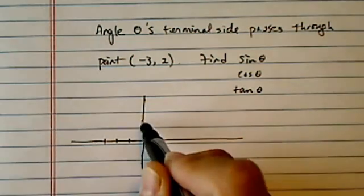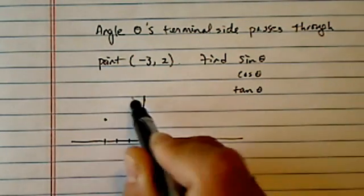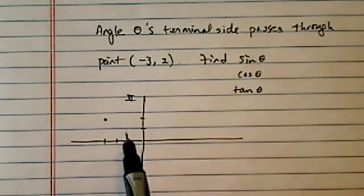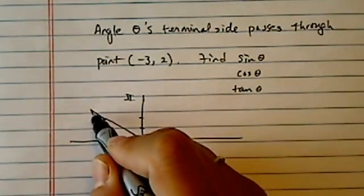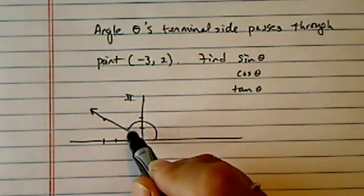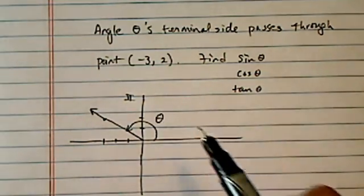Minus three and positive two, so we are in quadrant two here. Let's get the terminal arm drawn in, so here's my theta.